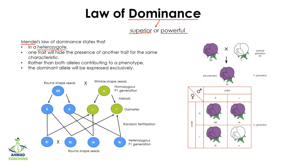A heterozygote means they have two different alleles — for example, capital R and small r — so they are heterozygous. One trait will hide the presence of another trait, so in a heterozygote one trait will express while the other will not express. Capital R represents round seeds, while small r represents wrinkled seeds. If a plant is heterozygous, only the dominant one will be expressed.